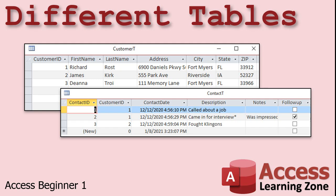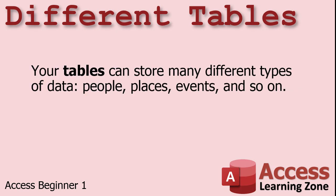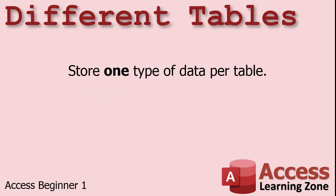In a timesheet table, for example, each record might represent one instance of an employee clocking in or out. Your tables can store many different types of data: people, places, events, and so on. You should store one type of data per table. Your customer table should hold information on your customers — you wouldn't store product information in your customer table. One of the mistakes that beginners make is they try to store too much information in one table. For example, you wouldn't try to store all of a customer's orders in the customer table — you'd use a second table for that.